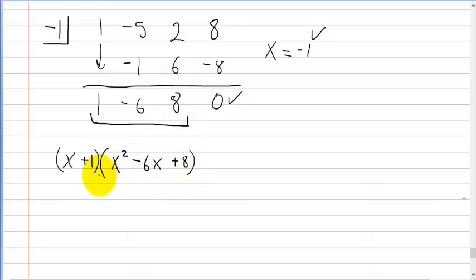So now at this point, we can go ahead and either do synthetic division again on this, or we can factor it. Now at this point, looking at it, it's not so bad to factor. So I'm just going to go ahead and just factor it, because I see that I have a -6 and an 8 here. So I know that I can do x plus 1, and then I can do x minus 2, and x minus 4.